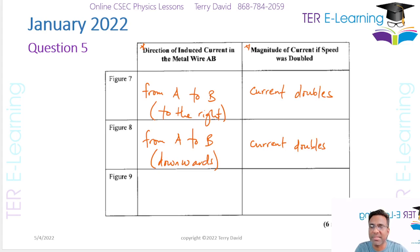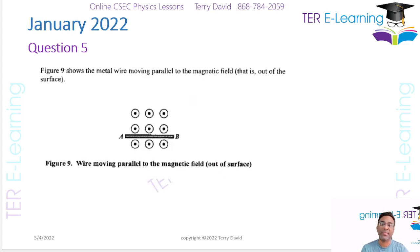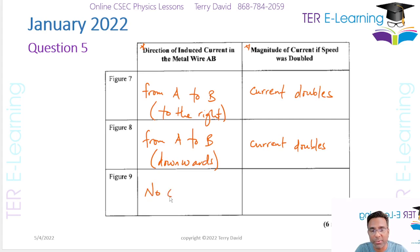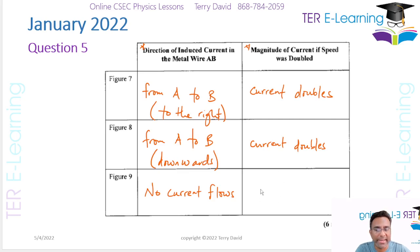For figure nine something different happens — the conductor is moving parallel to the magnetic field. When that happens, the magnetic field lines are not being cut, so no EMF is induced and there is no current. If we increase the speed there's no change — nothing happens in figure nine.